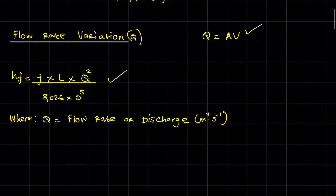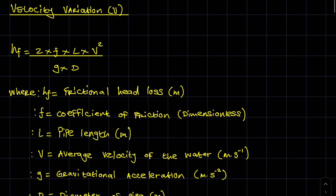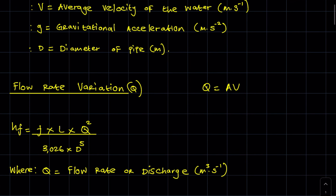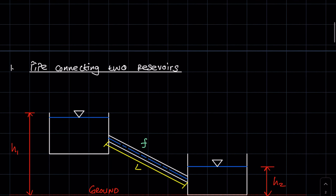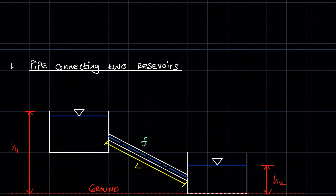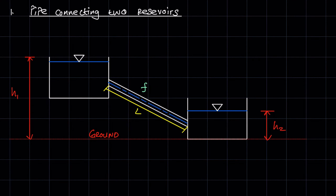Before we go to Chezy's formula, let's quickly look at the kinds of cases we will be dealing with under Darcy's and Chezy's formula. There are basically just two cases: one where you have a pipe connecting two reservoirs, and another where you just have a horizontal pipe. Under both, the pipe tends to have a constant diameter.